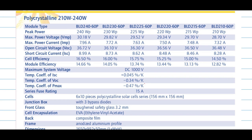Let us try to understand the temperature coefficients better by doing some examples. Before that, let us name the variables. The temperature coefficient of Isc we will call alpha_i, the temperature coefficient of Voc we will call alpha_v, and the temperature coefficient of peak power as alpha_p.